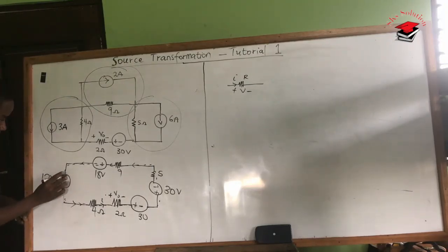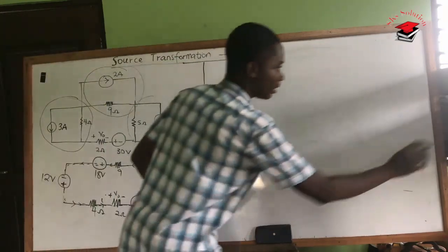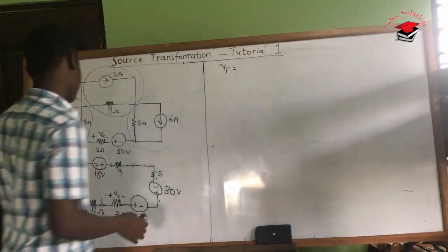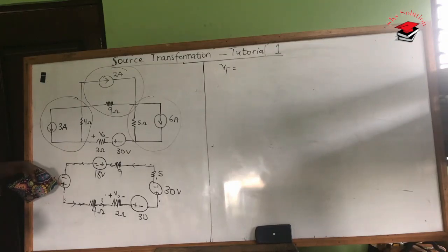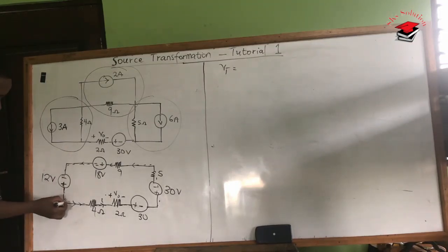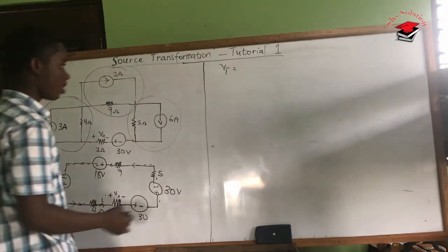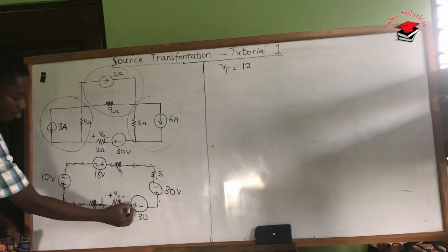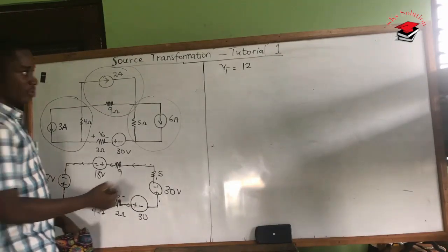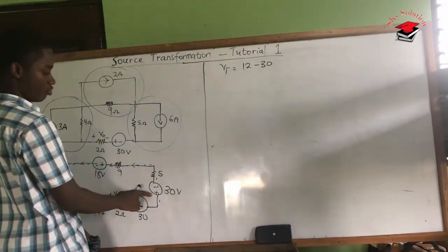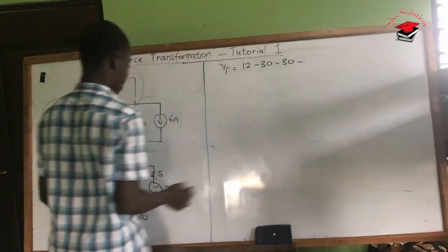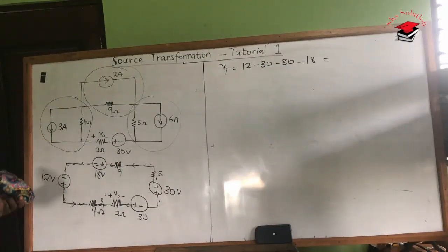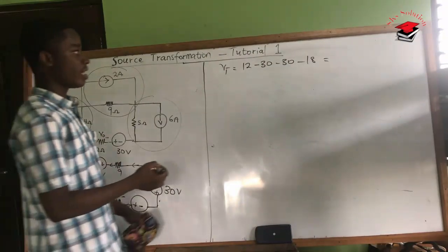Calculating the total voltage: the 12-volt source produces current in the same direction as our reference current, so it is positive — giving +12. The 30-volt source has its positive terminal oriented such that its current opposes our reference, so it is −30. Similarly, the 18-volt source opposes, giving −18. Our total voltage is therefore 12 − 30 − 18, which equals −36 volts.